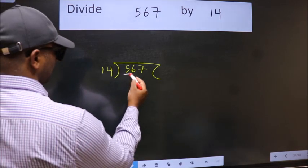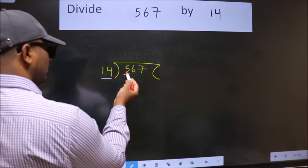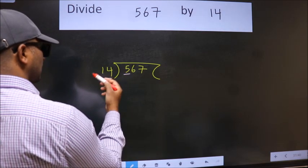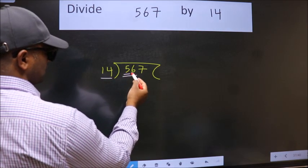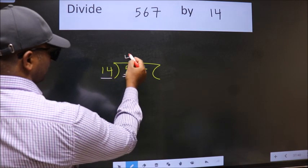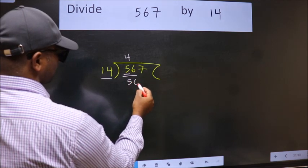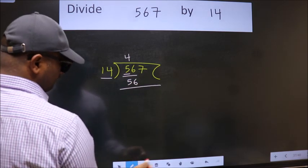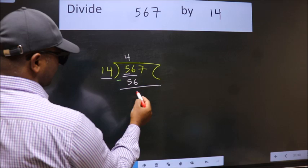Here we have 5. Here 14. 5 is smaller than 14, so we should take two numbers, 56. When do we get 56 in 14 table? 14 fours 56. Now we should subtract. We get 0.